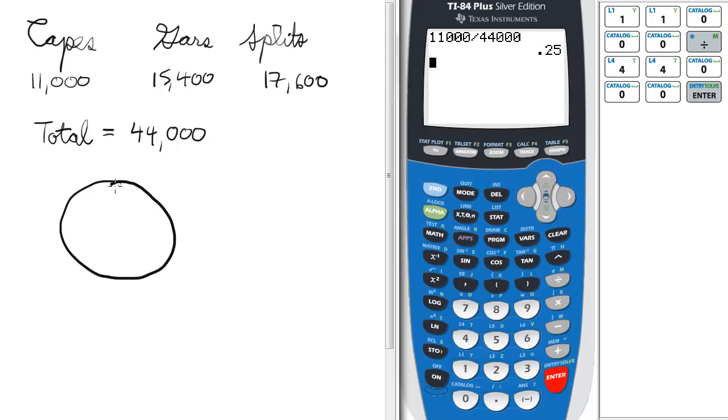One way to think of it is 25% is a quarter of the pie chart. So you cut it like that, that's the capes.